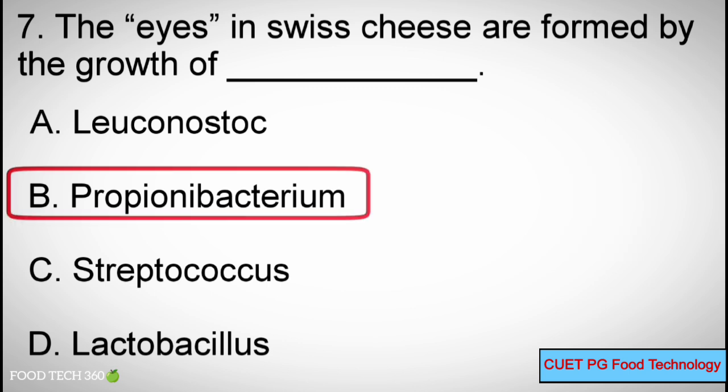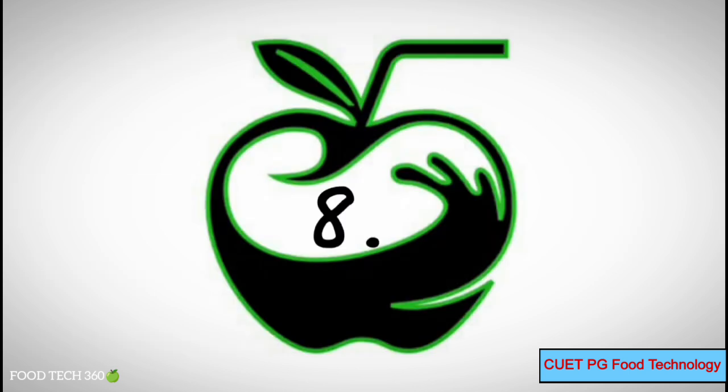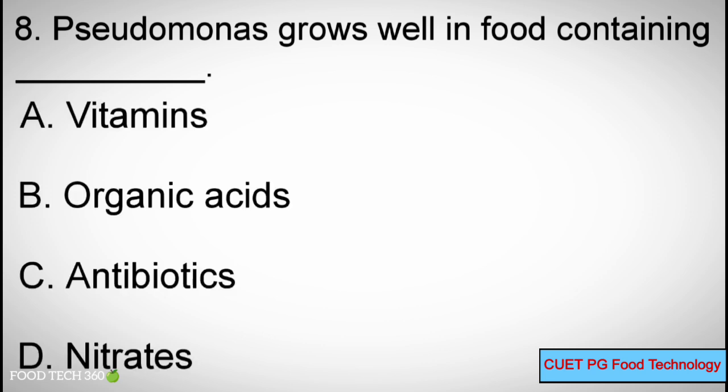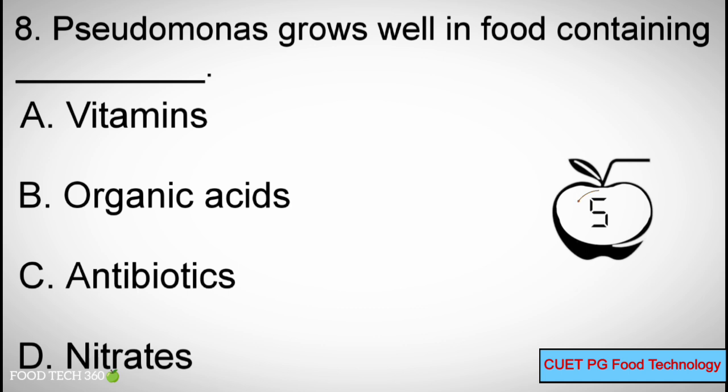Question number 8: Pseudomonas grows well in food containing — Options: A) Vitamins, B) Organic acids, C) Antibiotics, D) Nitrates. Correct answer: D) Nitrates.